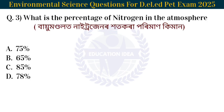Next question: What is the percentage of nitrogen in the atmosphere? Biomondolot nitrogen hoot kora poryman ki maan? The answer is 78%. The percentage of nitrogen in the atmosphere is 78%.